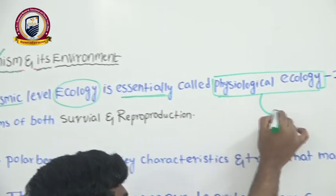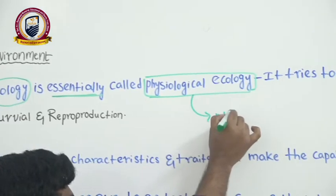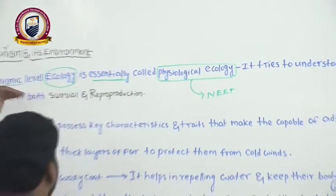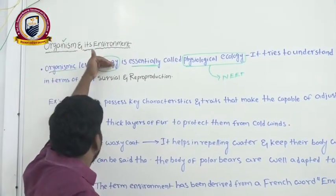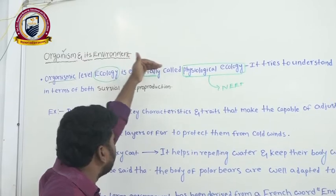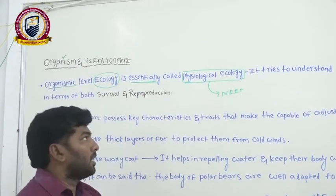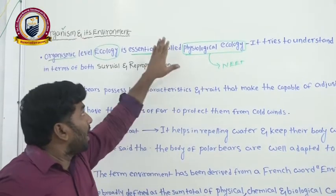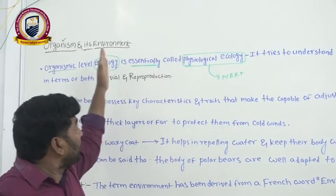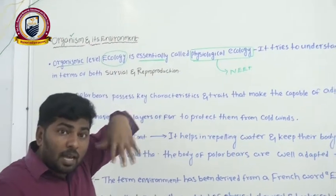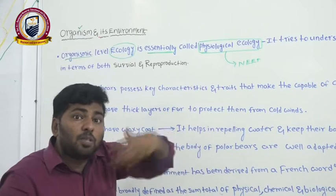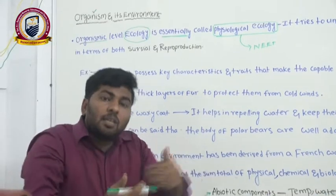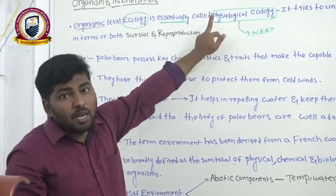This topic is given many times in NEET and other entrance exams. Organismic level ecology is called, or essentially we can call it as, physiological ecology. Why is it called physiological ecology? The reason is, when the organism is interacting with its environment, they are trying to adopt those environmental conditions by first changing their physiology.